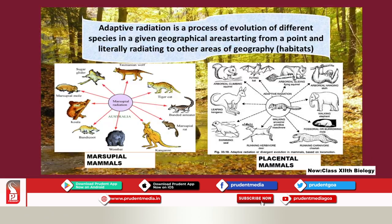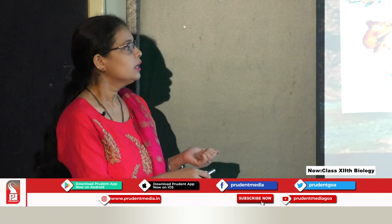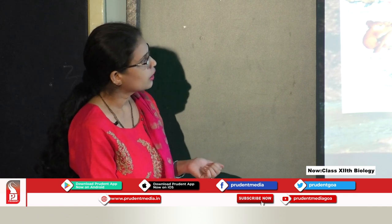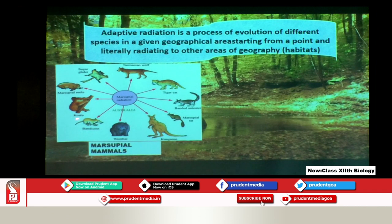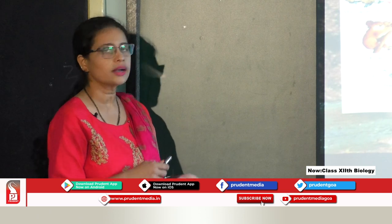Let us take one more example: marsupials in Australia. Marsupials are mammals which have a pouch and nourish their young ones in it. According to the study of evolution, there was only one original type of marsupial — very short with short limbs. Over a period of time, due to their need for food or to hide from enemies, they went to different habitats and adapted accordingly. Some are burrowing type, some are blind eaters, some are tree dwellers like the koala, some are adapted to flight like the sugar gliders.